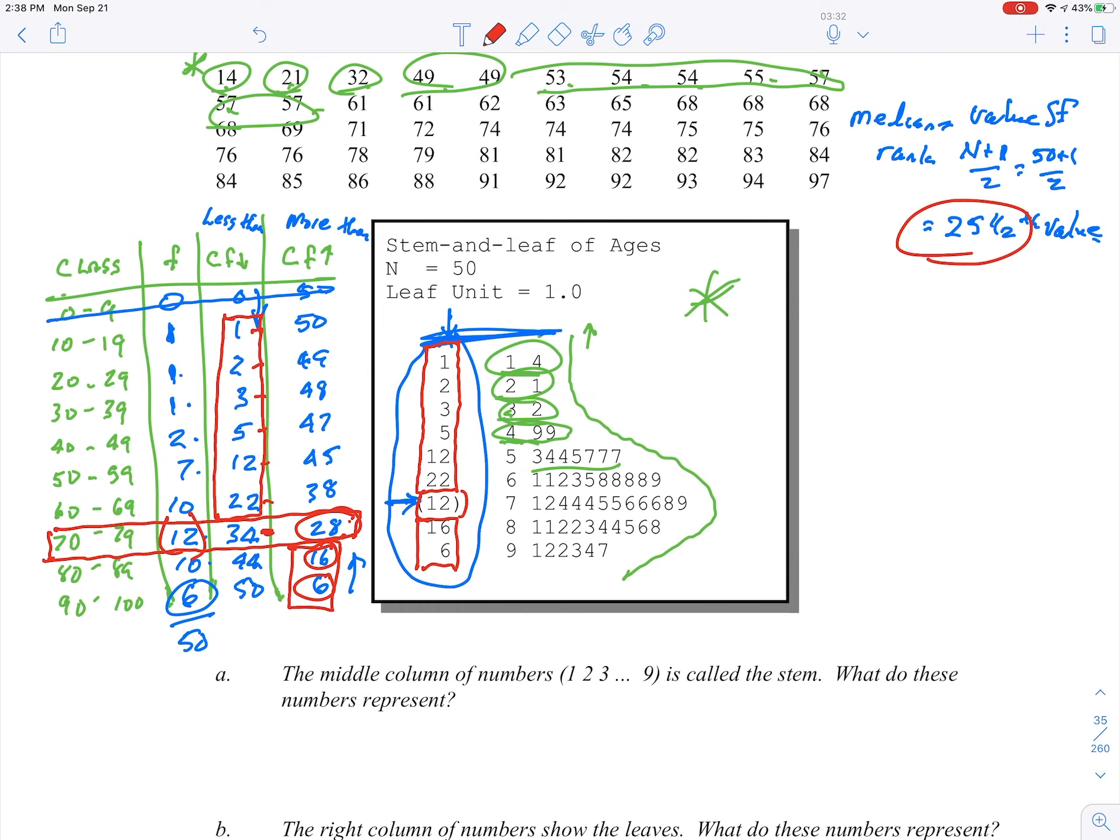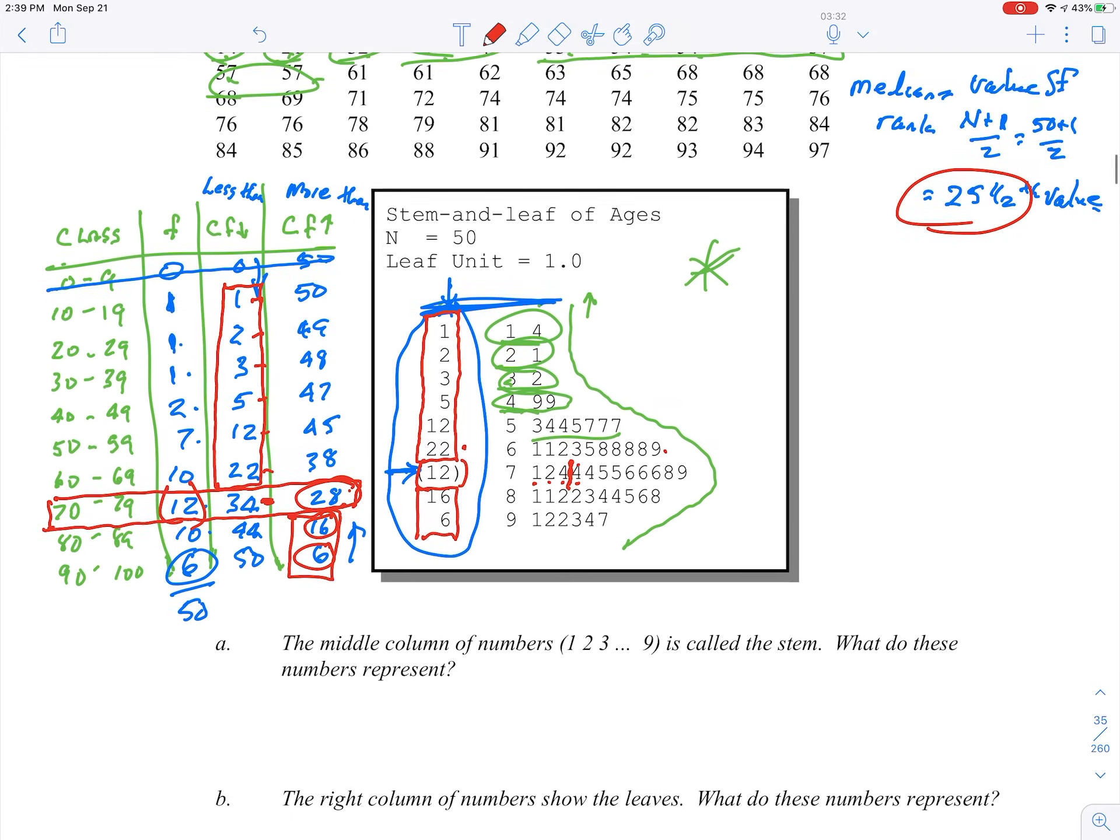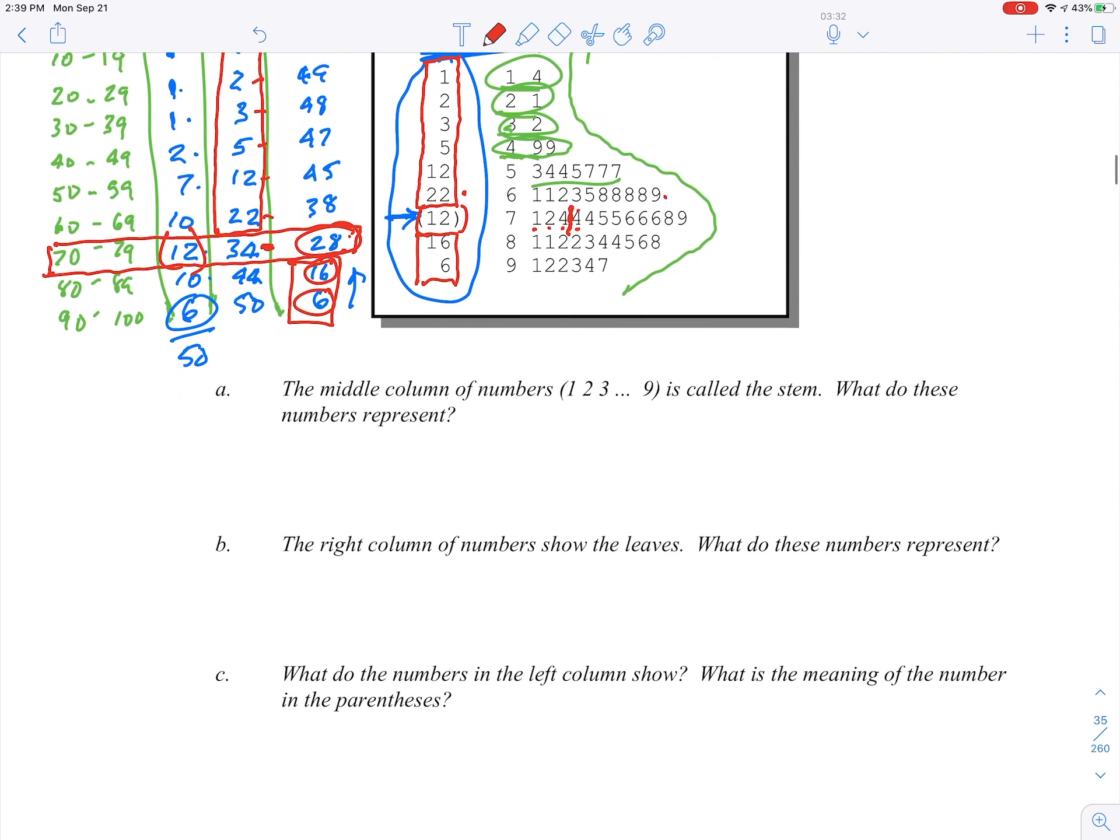If you wanted to find the median, you could go, we've got 1, 2, 3, 5, 12, 22. So we've got 22 to the end of the 60s. We're looking for the 25 and a half value. So it would be 23, 24, 25 and a half. It would be right in here, halfway between the two 74s, two of the three 74s. And so your median then would end up being 74. So that is the left-hand column.